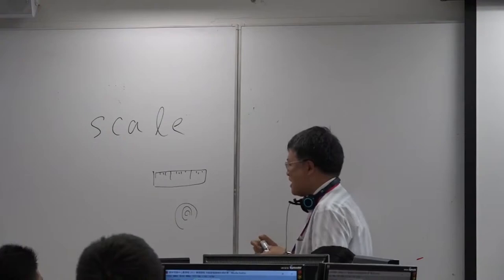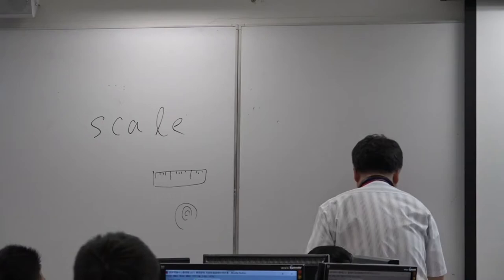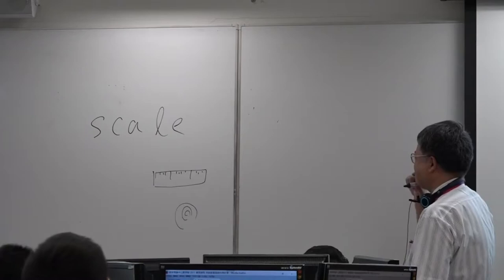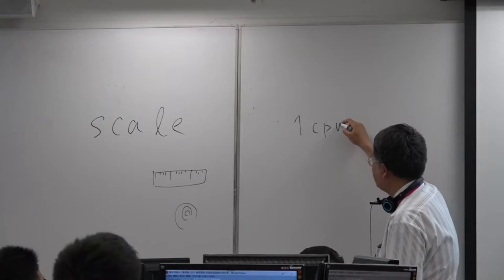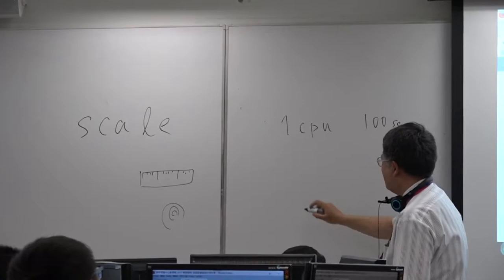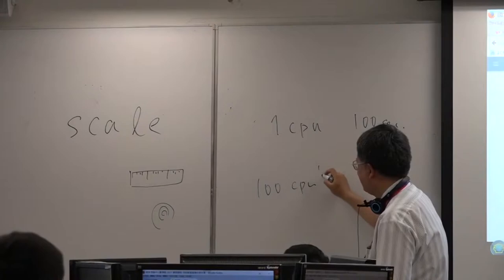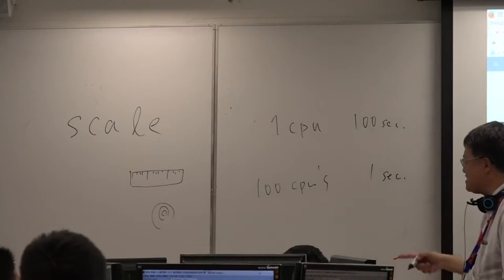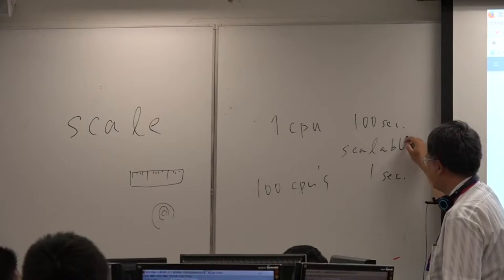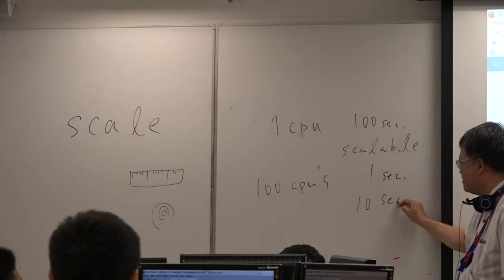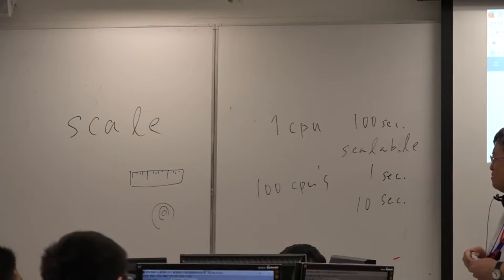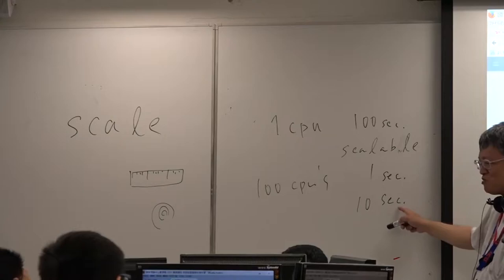Scalable is based on the word 'scale.' For example, if you are solving a problem using one CPU in 100 seconds, and then with 100 CPUs you can solve it in one second, that is called very scalable. Sometimes, even with 100 CPUs, you still need 10 seconds — that's only a 10x improvement. That is also scalable, but less so than the first case.